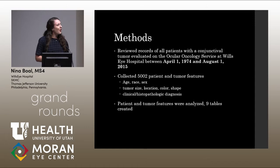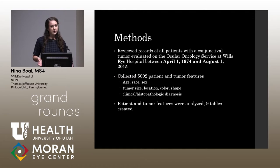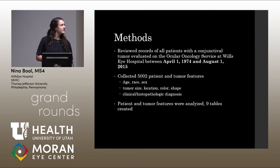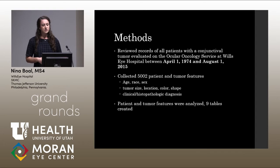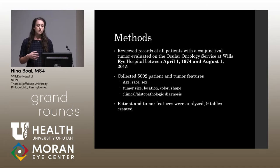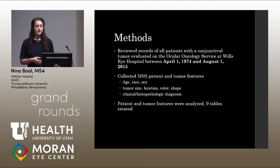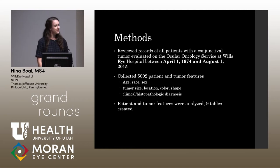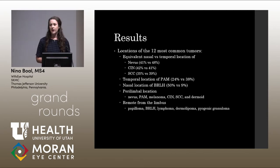For the methods, we reviewed all patients seen in the ocular oncology department with a conjunctival tumor — about 5,002 cases total. We reviewed charts from April 1st, 1974 until August 1st, 2015. We recorded patient and tumor features such as age, race, sex, tumor size, location relative to the limbus, color, shape, and presence of feeder vessels, as well as both clinical and histopathologic diagnoses. All these features were analyzed and compiled into nine tables.